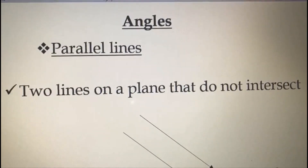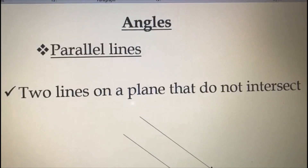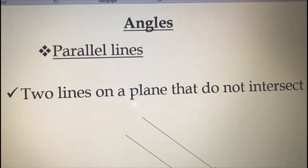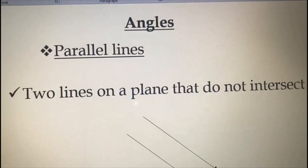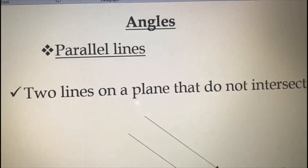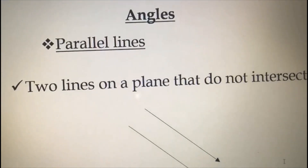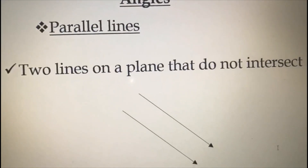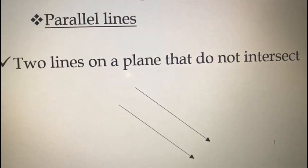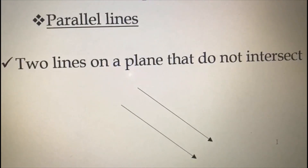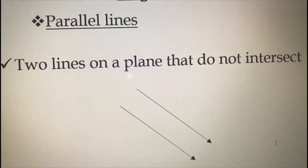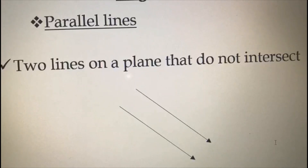We are moving to our next unit, that is angles. First I will tell about parallel lines. You already know what parallel lines mean — two lines on a plane that do not intersect. That is parallel lines.